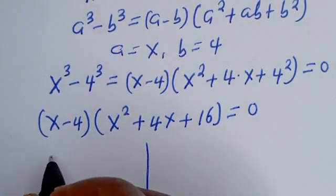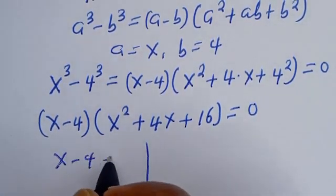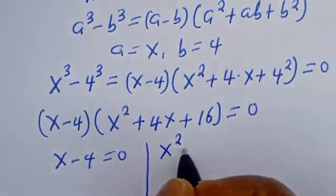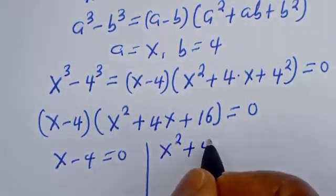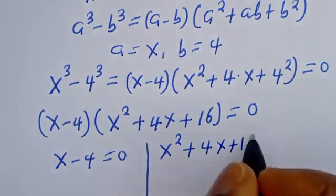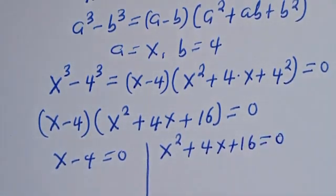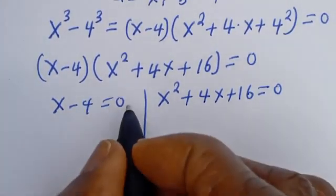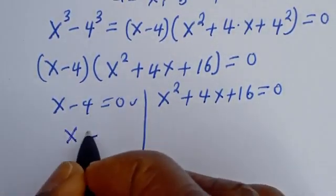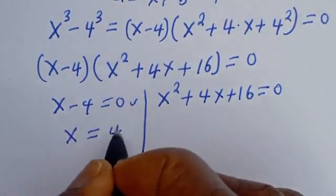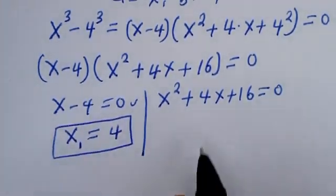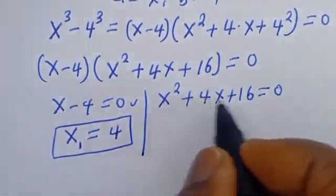There are two cases. The first case is s minus 4 equal to zero, which gives s equal to 4. Let's call this s₁.